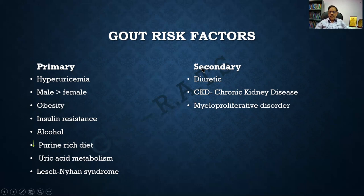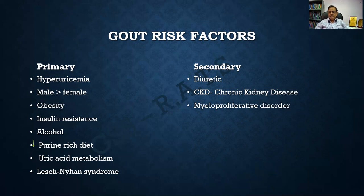For secondary causes, two things are important. First is a renal disorder — any chronic kidney disease can lead to gout due to impaired excretion of uric acid. Second is a myeloproliferative disorder or any malignancy: whenever there is increased nucleic acid turnover, uric acid is produced in excess, leading to gout. This includes malignancies and leukemias.